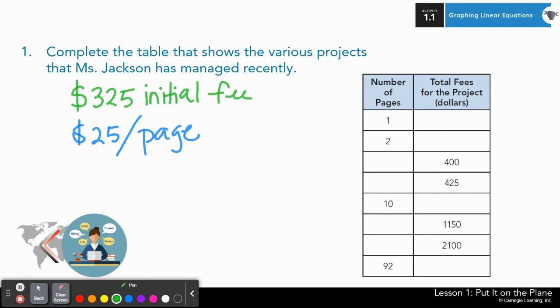So I'm first going to demonstrate how you would fill in one row, but then the rest, I'm going to give you guys time to work on your own. So number of pages. If she translates one page, well, she's got a $325 fee to get started plus $25 per page. How many pages? Just one. So times one, and that is equal to, I can do the mental math. This is easy. 25 times one is 25, 325 plus 25 more gives us $350.